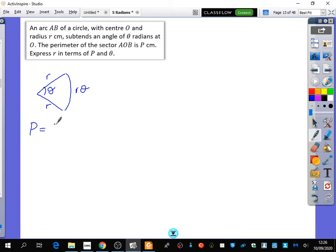It's 2R plus R theta. But careful what the question wants. The question wants us to express R in terms of P and theta. So we don't want P as the subject. We want R as the subject. How do I make R the subject? Factorize. When I factorize, I get P equals R times (2 plus theta). And then to make R the subject, I just divide by (2 plus theta). So R equals P divided by (2 plus theta). So it's simple, but it's just everything's algebraic for this.